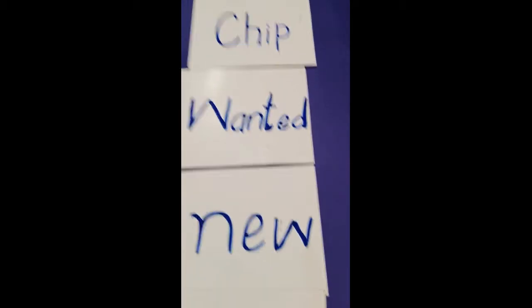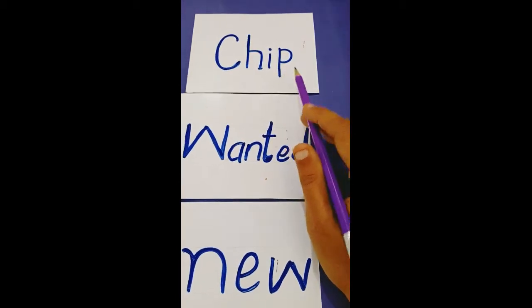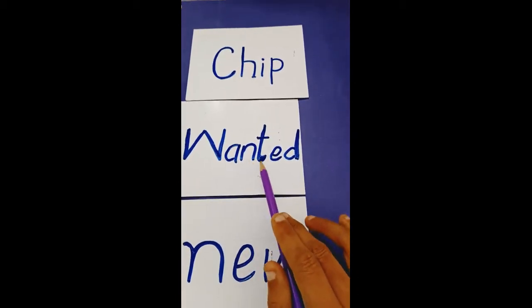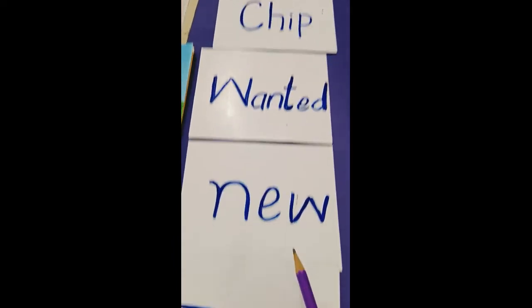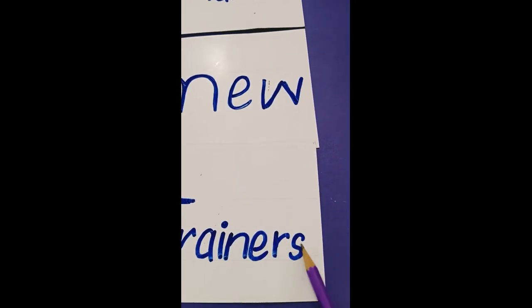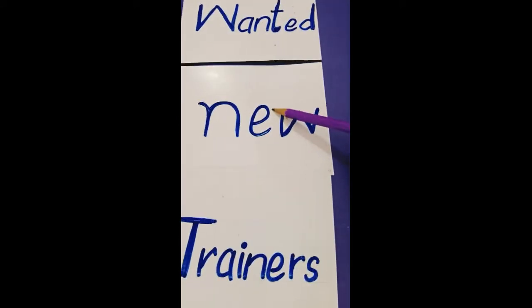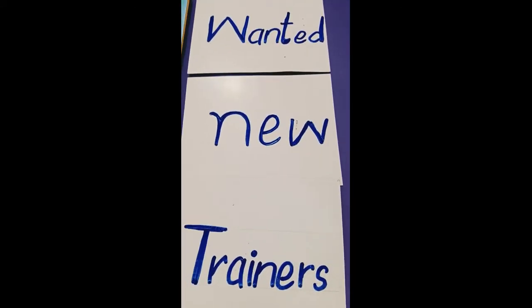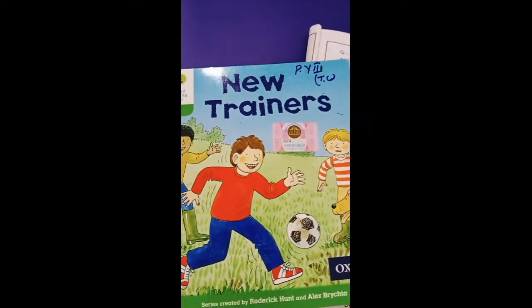अब हमारे flash card की reading है। सबसे पहले है: CHIP — C-H-I-P. WANTED — W-A-N-T-E-D. NEW — N-E-W. TRAINERS — T-R-A-I-N-E-R-S. यह आपकी new book start हो रही है, new trainers के नाम से। इसके flash card हमने read किये हैं।